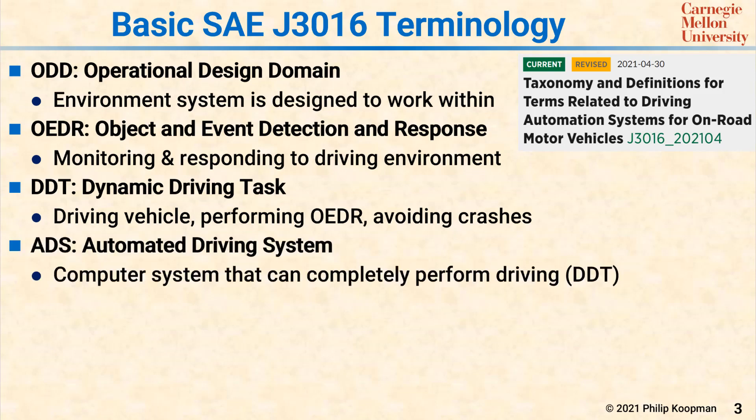An ADS, an Automated Driving System, is a computer-based system that is able to completely perform the Dynamic Driving Task, DDT. This means that in normal conditions, one puts an ADS into a vehicle, and the ADS's job is to perform the dynamic driving task at least. That gets you an SAE Level 3 or higher vehicle.